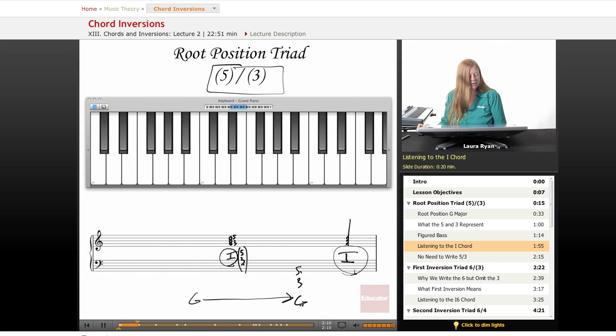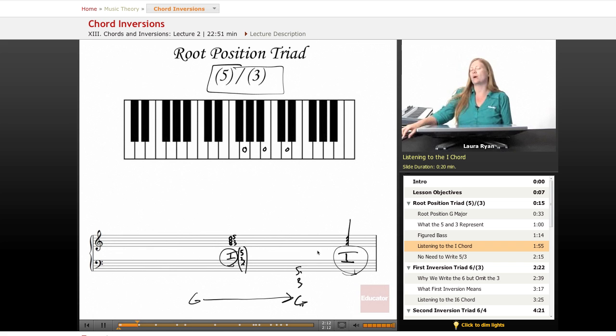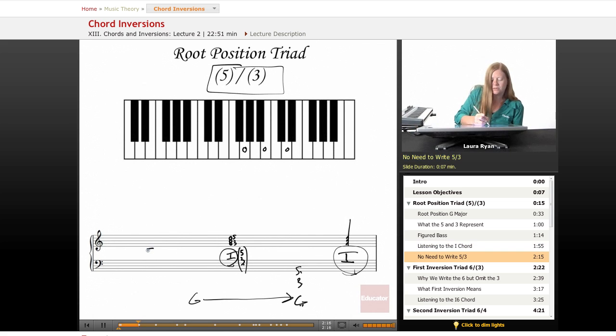We sometimes write the five, three to illustrate this point when we're learning about inversions, but generally if you see... so we'll write a lower G, G, B, D. This is one. You don't need to write five, three.